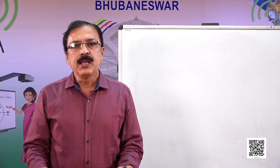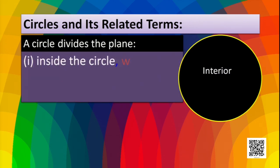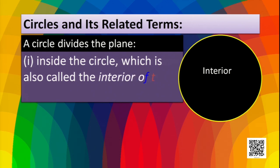A circle divides the plane into three parts. As you see, the yellow line is the circle, and the region inside it is one part. The first part is called the interior of the circle — the region inside the circle. This is one part of the plane.